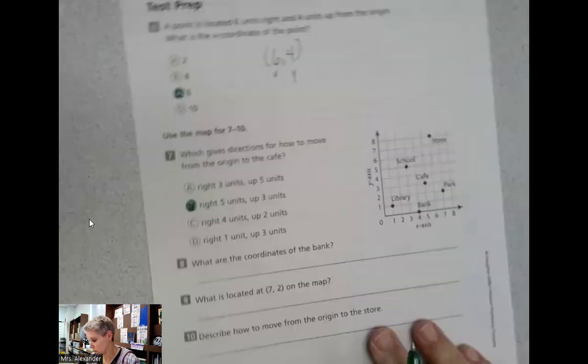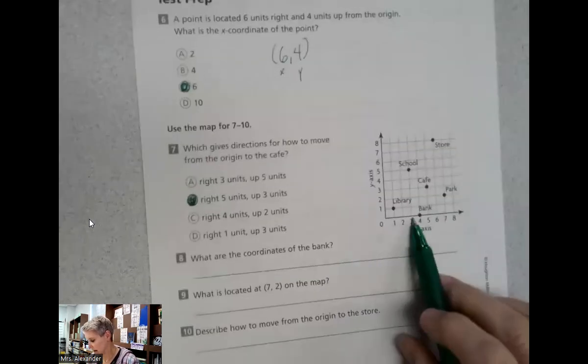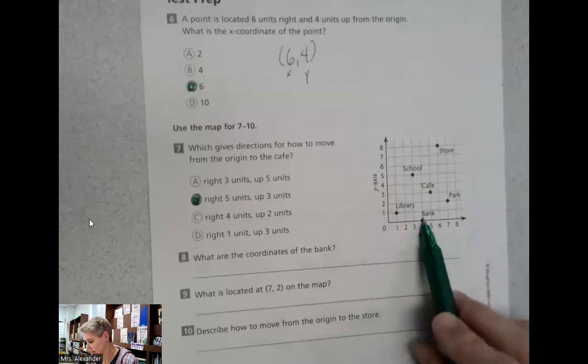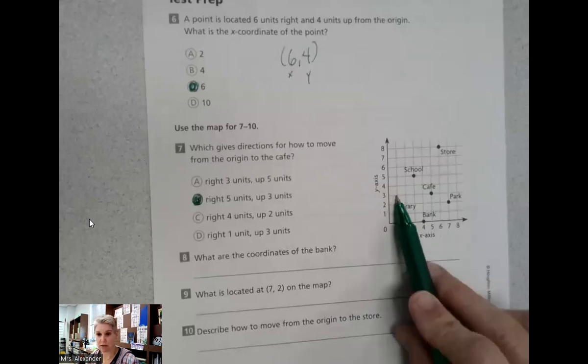If I do right three units and up five units, I'm at the school. Right four units and up two units, there's nothing there. Right one unit and up three units, there's nothing there.